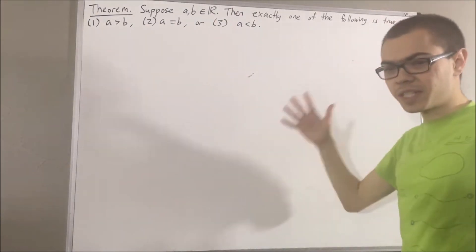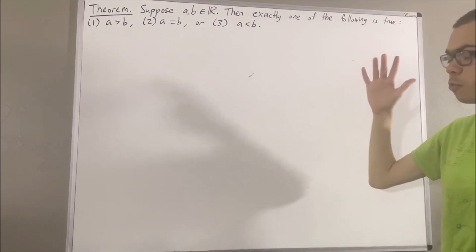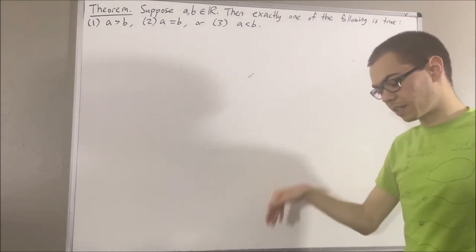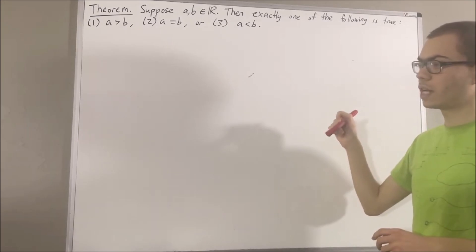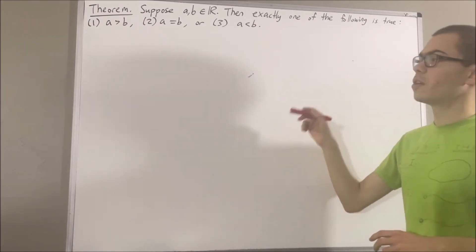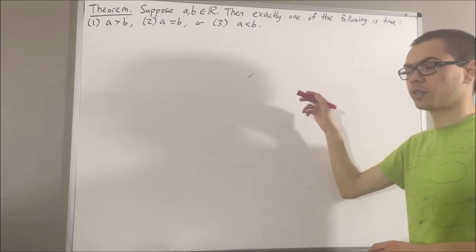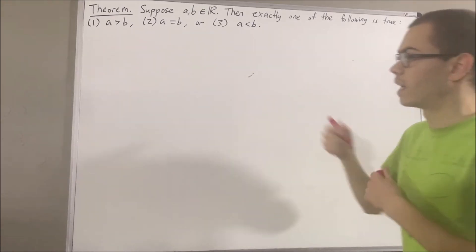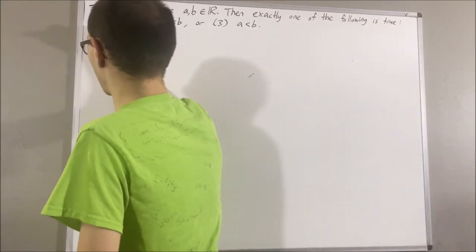Now, in this series, we are using a list of 10 axioms for the real number system, and I'll leave that list of axioms in the description below. In our real number system, the real numbers are equipped with a subset which we call the set of positive real numbers, denoted as R+.